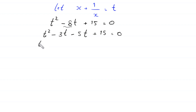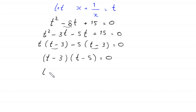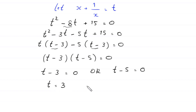This is a quadratic equation and it is factorable. We split negative 8t as negative 3t minus 5t, giving t squared minus 3t minus 5t plus 15 equal to 0. From the first two terms we factor out t, leaving t minus 3. From the last two terms we factor out negative 5, also leaving t minus 3. So t minus 3 is the common factor, giving t minus 3 times t minus 5 equal to 0. Either t minus 3 equals 0, giving t equals 3, or t minus 5 equals 0, giving t equals 5.